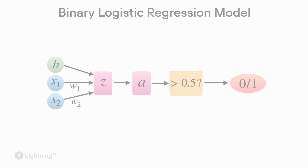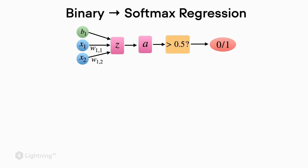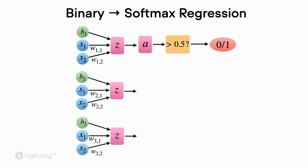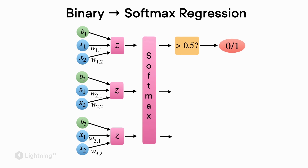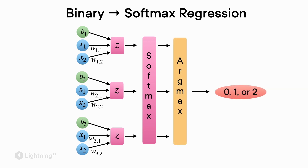Now we are going from binary logistic regression to multi-class logistic regression, also called softmax regression. The first step is that we need multiple weights — we duplicate the structure, so here we have three sets of weights, making this a model for three classes. Next, we swap out the sigmoid activation function and replace it with a softmax activation function. Another modification is that we get rid of the threshold function and replace it with a so-called argmax function. This model can deal with three classes: zero, one, and two.